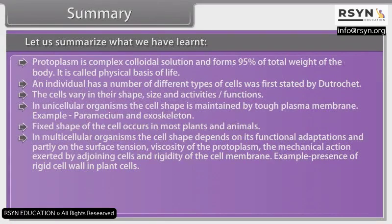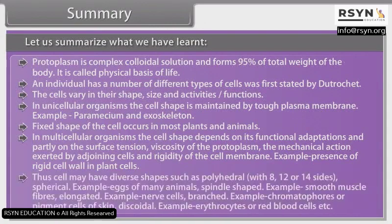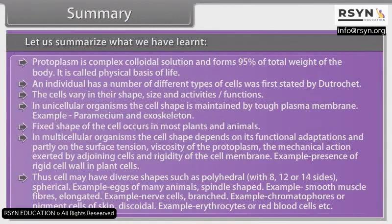For example, the presence of a rigid cell wall in plant cells. Thus, cells may have diverse shapes such as polyhedral with 8, 12 or 14 sides; spherical, for example eggs of many animals; spindle-shaped, for example smooth muscle fibers; elongated, for example nerve cells; branched, for example chromatophores or pigment cells of skin; and discoidal, for example erythrocytes or red blood cells.